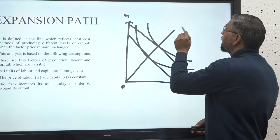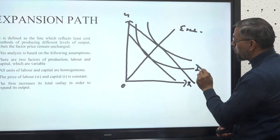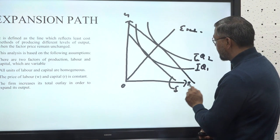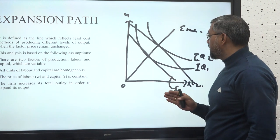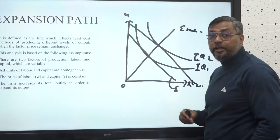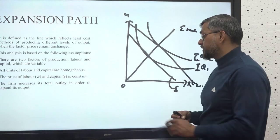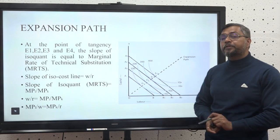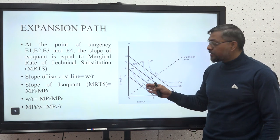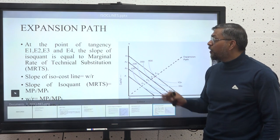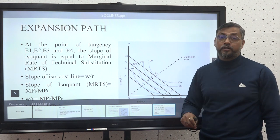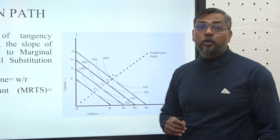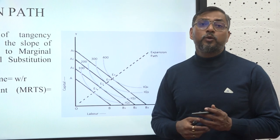This line is an expansion path. This is isoquant one and this is isoquant two. These are the first and second least cost combinations. The point where your iso cost line is tangent to your isoquant is the point where the least cost combination exists. After joining all the points of least cost combination, we get an expansion path. There are points E1, E2, E3, and E4 where your iso cost is tangent to your isoquant, and joining these points gives the expansion path of a firm.